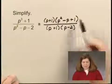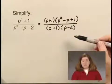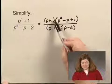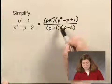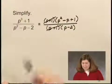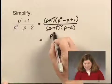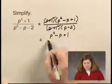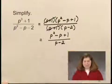Now the numerator and the denominator have been factored, so I look to see if there are any common factors. p plus 1 is a factor of the numerator and of the denominator, so I can cancel or remove a factor of 1 and write that the simplified form is p squared minus p plus 1 over p minus 2.